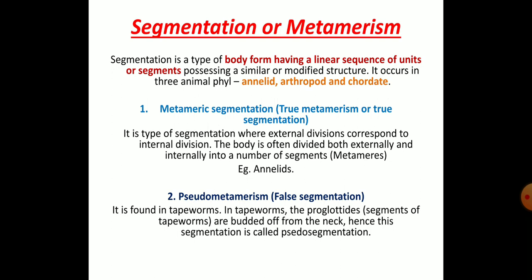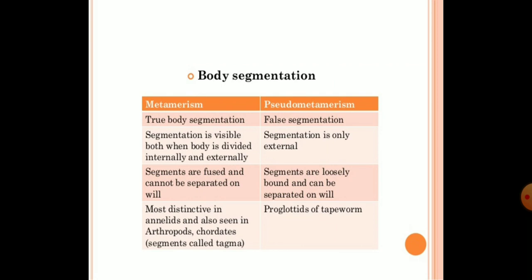Pseudometamerism or false segmentation is found in tapeworms. The segments arise from the neck region and are called proglottids — budded from the neck region. Segmentation does not take place throughout the body; it occurs only near the neck region. Comparison: in true metamerism, segmentation is visible both internally and externally and segments are fused and cannot be separated (annelids, arthropods); in pseudometamerism, segmentation is only external and segments are loosely bound and can be separated (tapeworms).